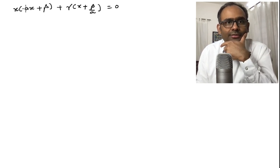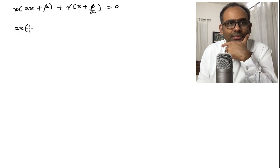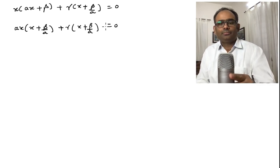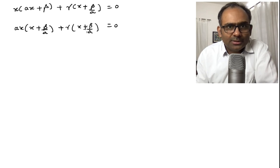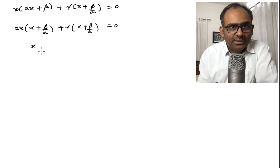Now, if I pull out a factor of a here, I will get ax x plus beta over a plus gamma x plus beta over a and that is equal to 0. So, you see that x plus beta over a is common. I will take that factor common and then it will leave us with ax plus gamma. So, ax plus gamma and x plus beta over a.